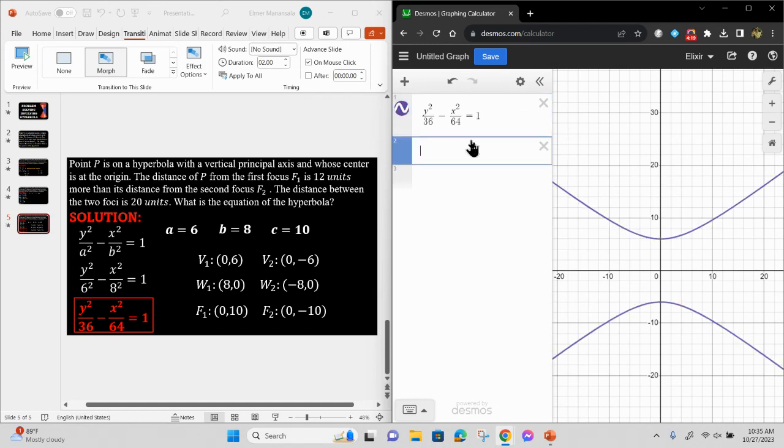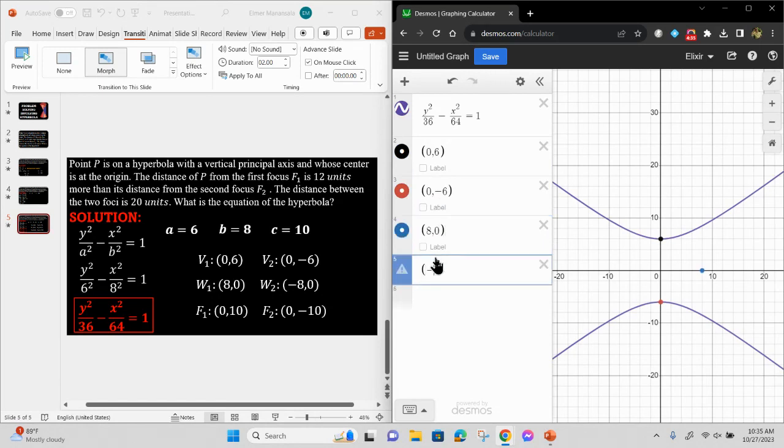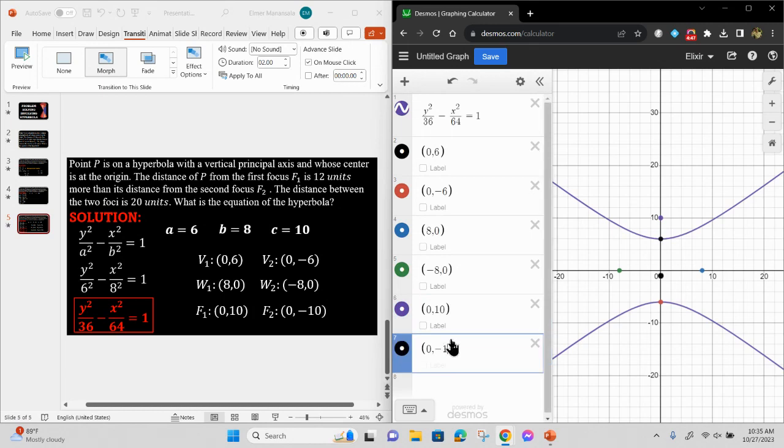Ipa-plot natin yung mga vertices: (0,6), (0,-6). Yan na, tama naman siya. (8,0) and (-8,0). And last, yung foci: (0,10), (0,-10). Yan.